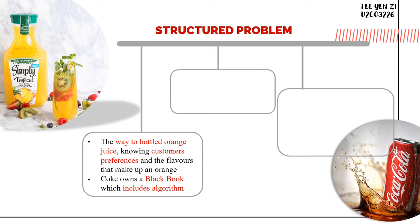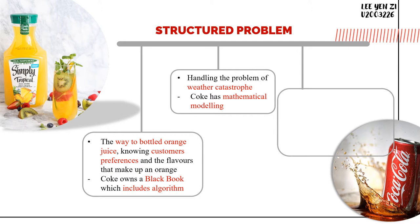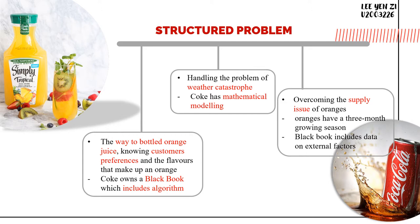The first structured problem is the way to bottle orange juice, knowing customers' preferences and the flavors that make up an orange. This is because Coke owns the Black Book, which is an algorithm that includes detailed data about the methods to make, blend, and bottle the orange juice. The second structured problem is the way to handle the problem of weather catastrophes. Coke has mathematical modeling which can help Coke to regroup and replant at once. The last one is Coke's ability to overcome the supply issue of orange juice, as orange juice has a 3-month growing season but orange juice production is year-round. By using the data in the Black Book, which includes data on external factors like weather patterns, Coke can ensure they will have enough supplies for at least 15 months.